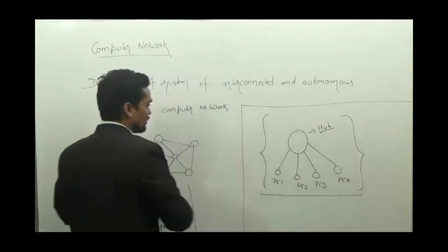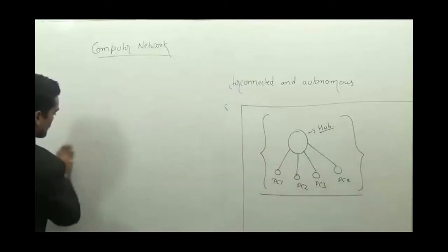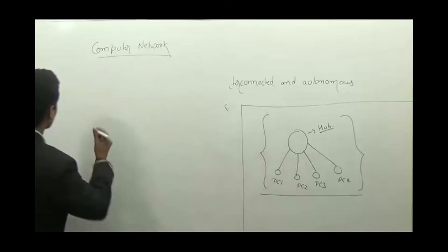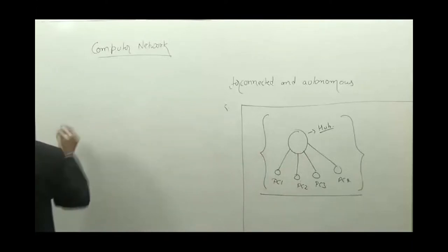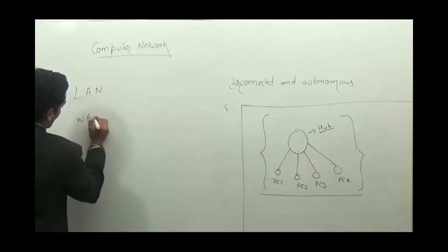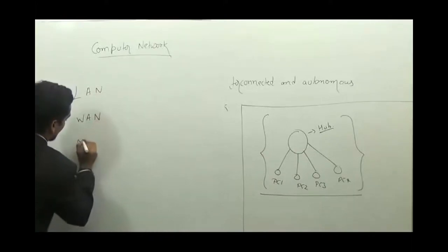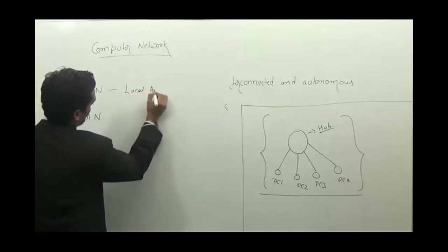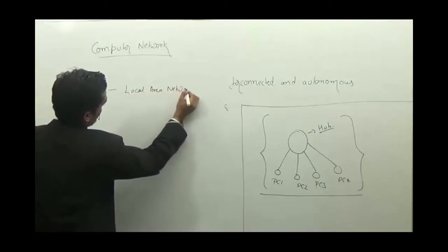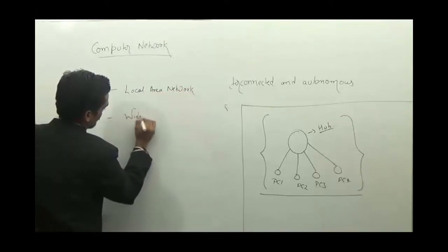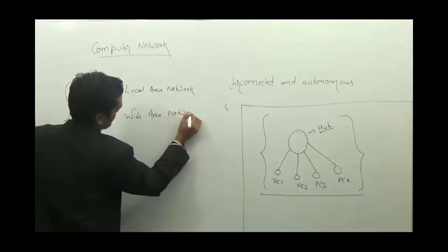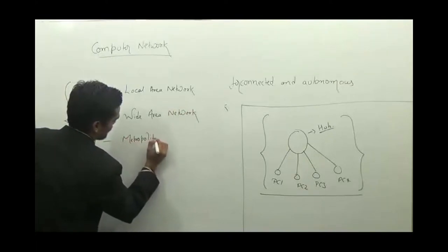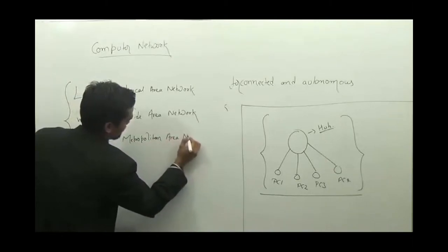Computer network hardware comprises of all these things. I had also written something about the arrangements - that means in what way they are arranged. And you might be knowing about this LAN, WAN and MAN. This is a local area network, WAN is wide area network and MAN is metropolitan area network.